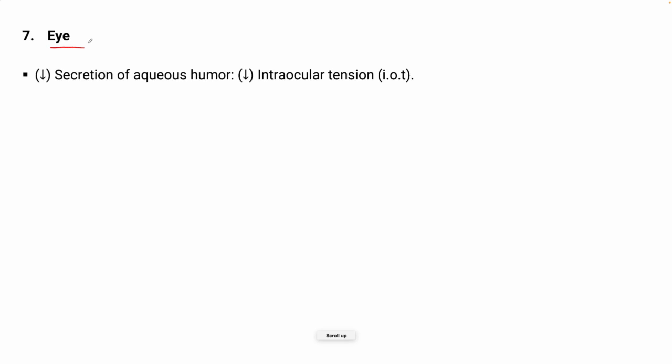Regarding the effect on the eye: beta blockers decrease the secretion of aqueous humor, hence intraocular tension is reduced.